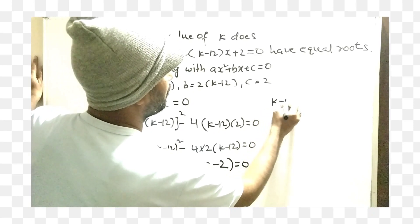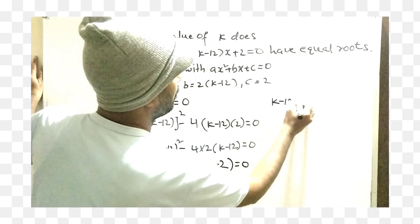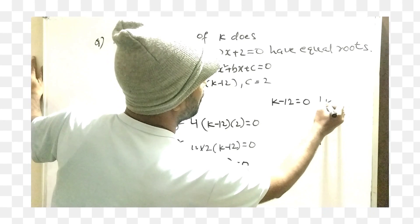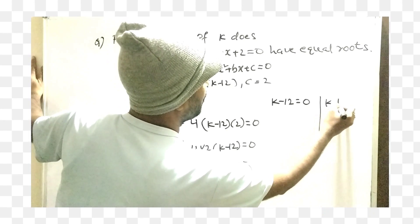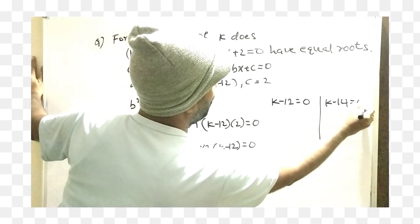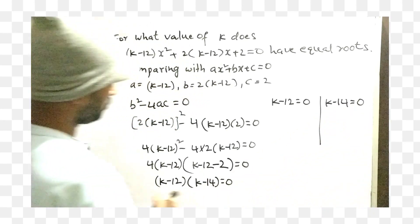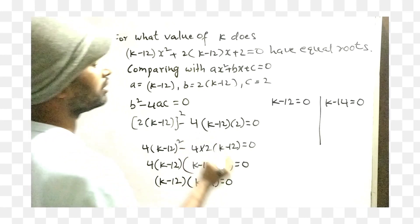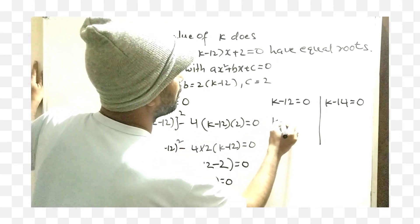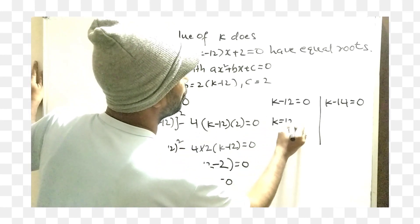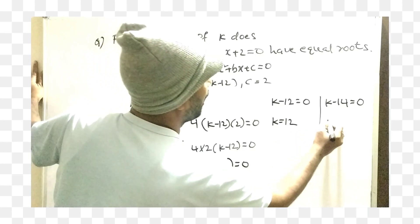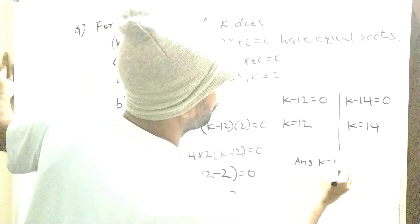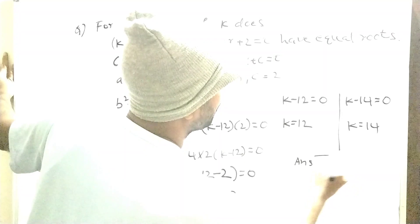So here we can write: k minus 12 equals 0, or k minus 14 equals 0. Therefore k equals 12 or k equals 14.